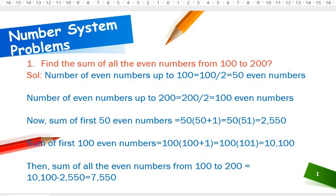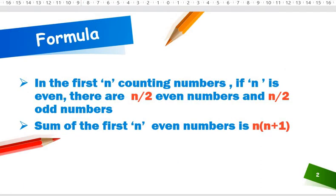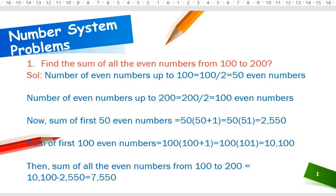First, let's look at the formulas. In the first n counting numbers, if n is even, there are n by two even numbers and n by two odd numbers. Next, the sum of the first n even numbers is n into n plus one. By using these two formulas we are going to solve this question.